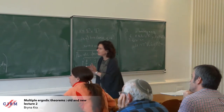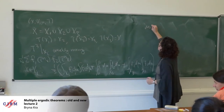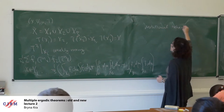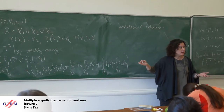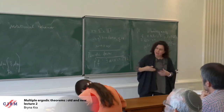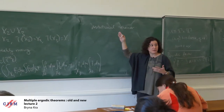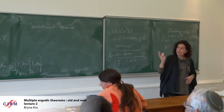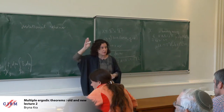The point of this example is that these double averages, even though this is not a pure rotation, depend solely on this rotational behavior. It's not a rotation system, it's not a purely weakly mixing system, but it has a non-trivial rotational factor — a non-trivial Kronecker factor. And that's exactly what controls the behavior of these double averages: the rotational behavior that's going on here.